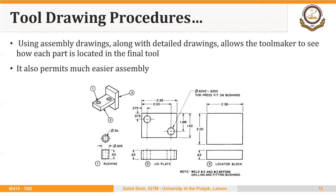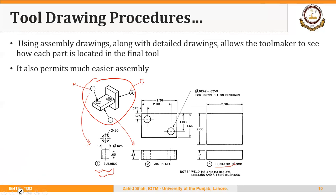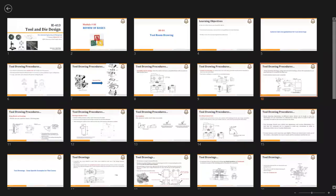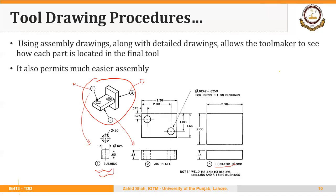Sometimes we can use a combination of assembly drawing and detail drawing. The assembly drawing for this assembly comprises three major components indicated by numbered balloons. One is the bushing with its details shown, two is the jig plate with its details, and three is the locator block with its details. The assembly drawing and detail drawing can be used together on the same sheet to show both the position of components in the assembly and the detailed dimensions of each component.